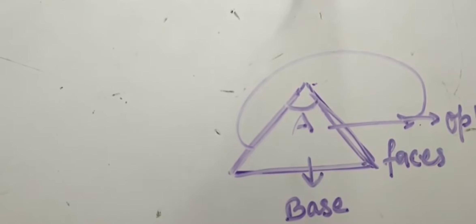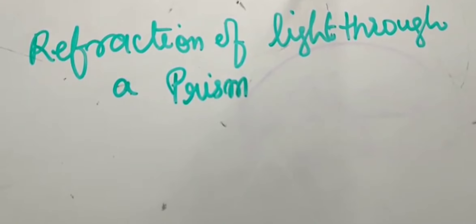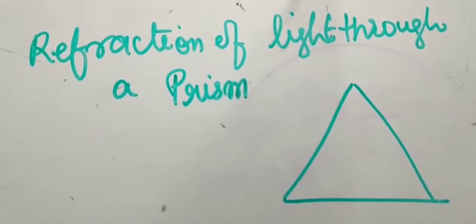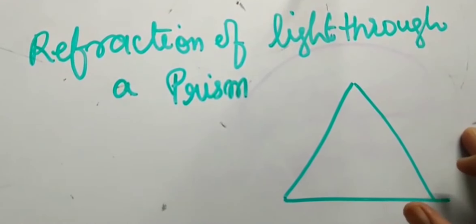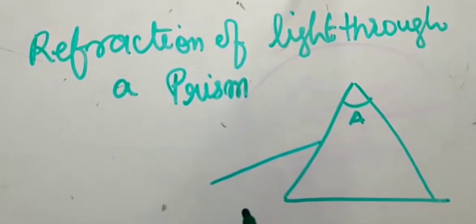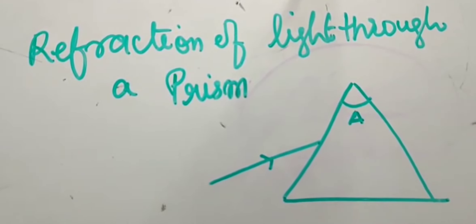Now I will start the topic. You have already learned what refraction is from your previous chapter and from the starting of this video. We will see what happens when light falls on a glass prism and how it is refracted. I am going to draw a prism here — this is the prism, this is the base, these two are the opposite sides, and here the angle of prism is forming. Imagine a light ray is falling on the opposite face of the prism like this.